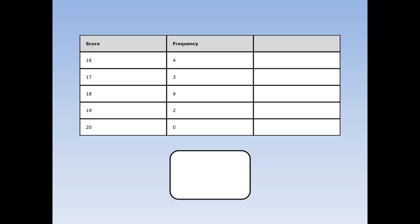We asked 18 pupils what score did you get in your last math test? 4 of them said they got 16. 3 said they got 17. 9 said they got 18. 2 said they got 19. And nobody got 20. To find the median, first we do the cumulative frequency. How many people got 16 or below? Just the people who got 16 — that's 4. How many got 17 or below? All the people who got 16 plus all the people who got 17: 4 plus 3 is 7.